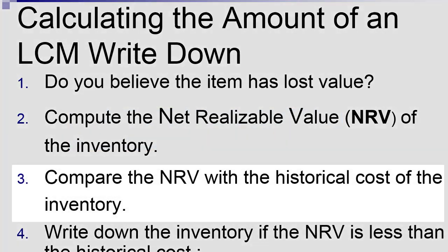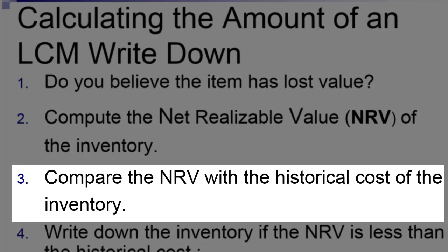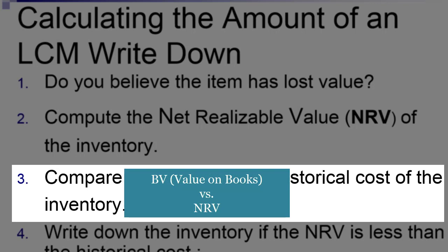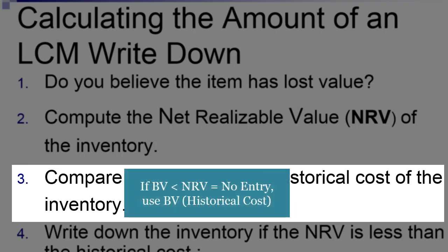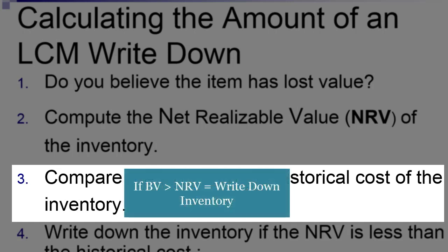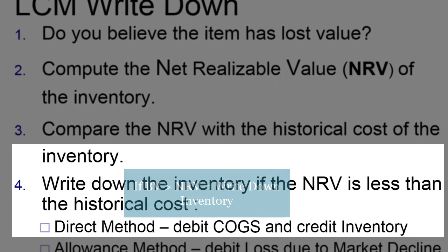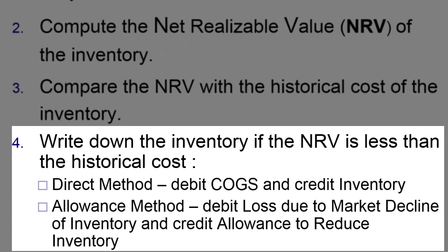Once I have a net realizable value, I compare that with the historical cost of my inventory — what I've got it worth on my books versus what I think I'm really going to get out of it right now. If the net realizable value is higher, I don't worry about it and leave it at historical cost. If the net realizable value is lower, then I have to write it down to that net realizable value. If net realizable value is less than historical cost, I do a journal entry to get my inventory from where it is down to where it should be.